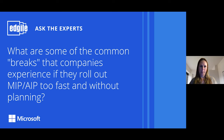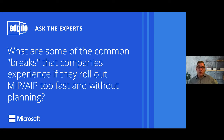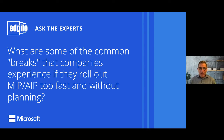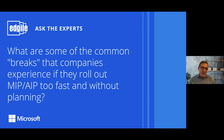Josh asked: what are some common breaks companies experience if they roll out too fast without planning? Generally it goes like this — someone very high up in your organization gets an encrypted email they can't read, and says 'I don't want this anymore, it breaks my business.' Those would be a break. You encrypt a bunch of data that needs to move from one department to another and only one department has access to it and it's locked down.